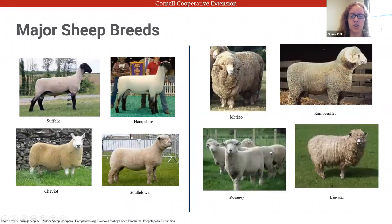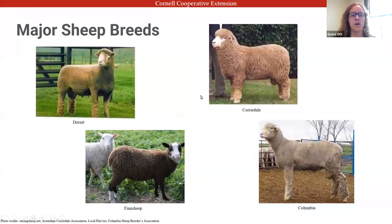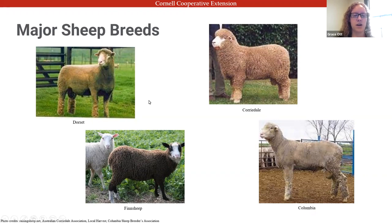There are also common wool breeds — these animals don't muscle as well, but the quality of their fiber is much better. Then there are dual-purpose breeds, bred for both good meat and high-quality wool. One of the more common ones in the U.S. is the Dorset breed.